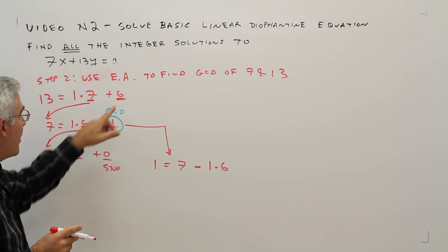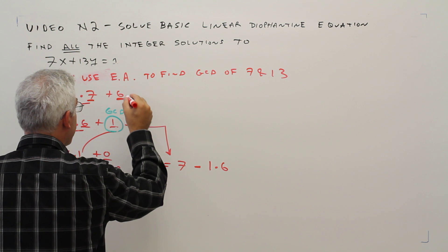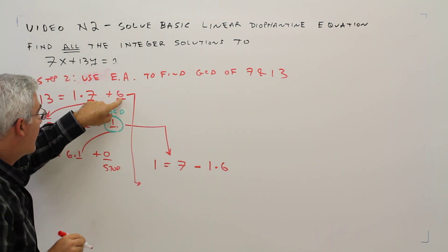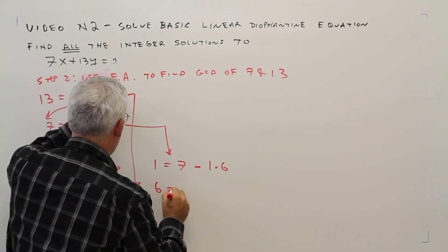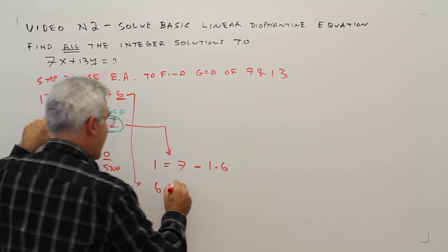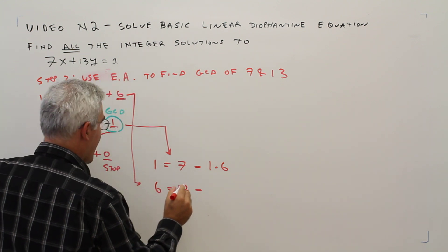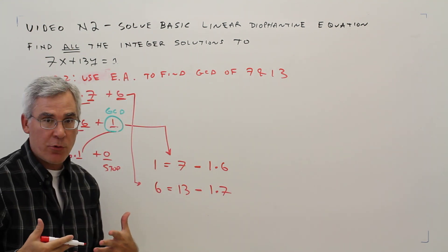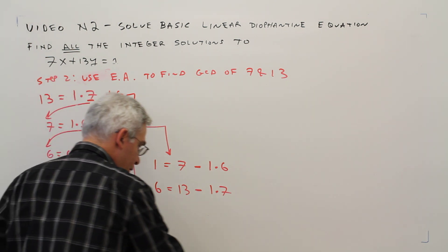And then go the step above and again solve for the right-hand side. 6 equals 13 minus 1 times 7. So that's how I'm going to generate these two equations. Then I'm going to use substitution.